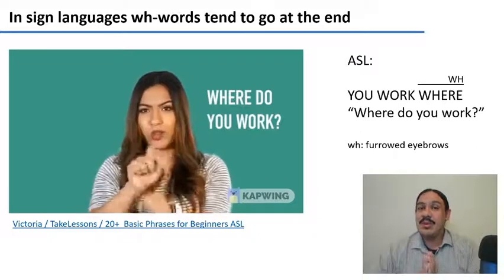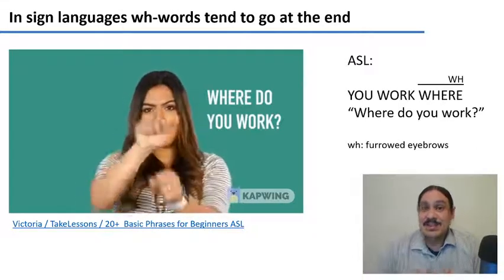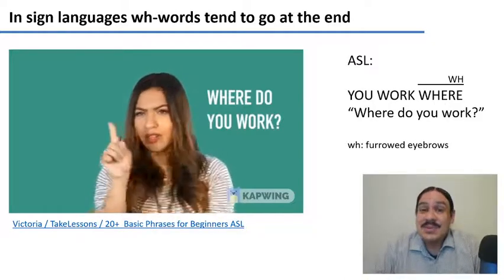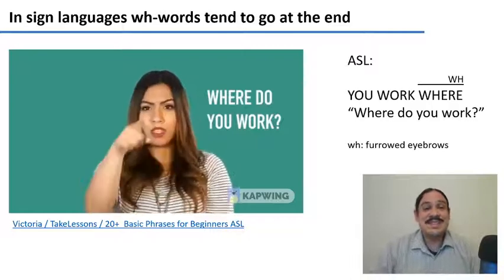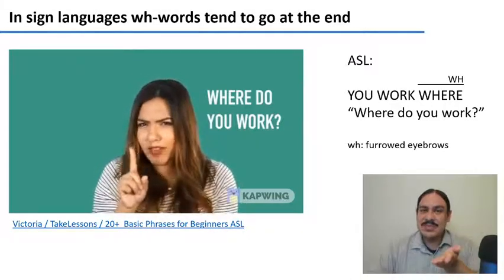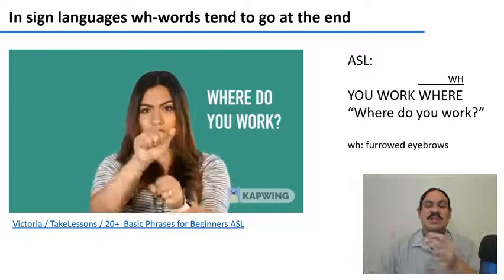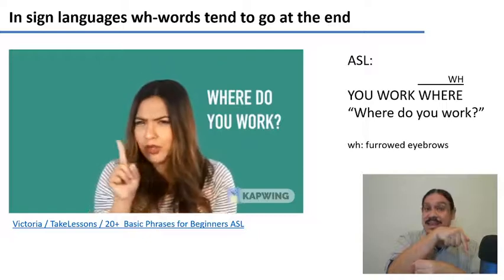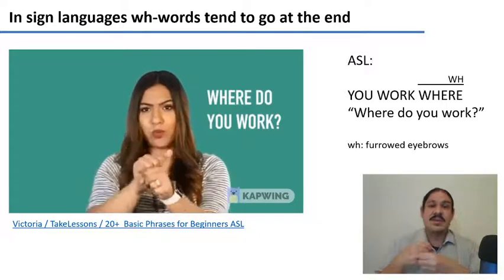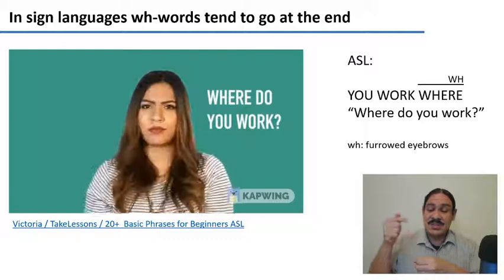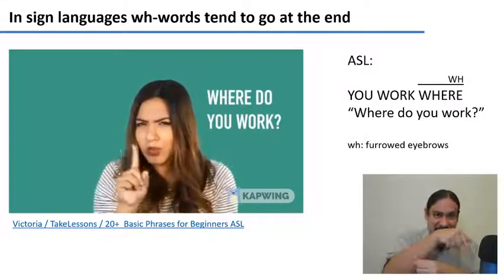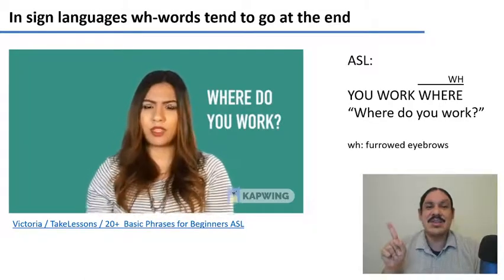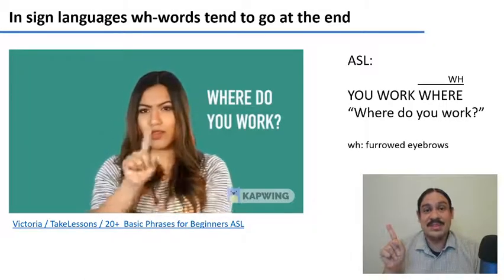There are overwhelming similarities between the two modalities — spoken and sign languages — when it comes to syntax. But there are a few differences. One of the most salient ones is that in spoken languages, wh-words tend to either stay in place (that's wh in-situ) or move to the beginning of the sentence (that's wh movement). In sign languages, wh-words tend to go at the end, which is a very unusual position for them in spoken languages.